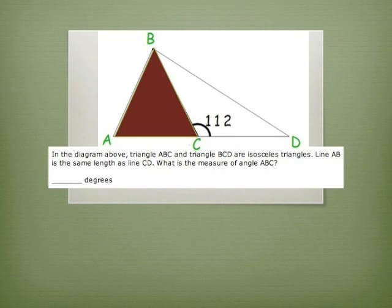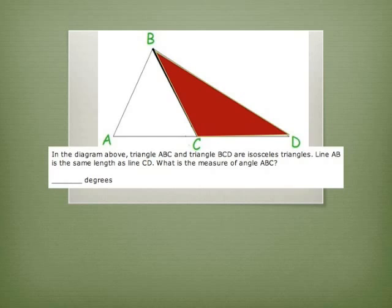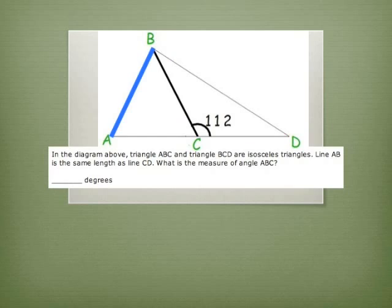In the diagram above, triangle ABC and triangle BCD are isosceles triangles. Line AB is the same length as line CD. What is the measure of angle ABC? That angle right there.